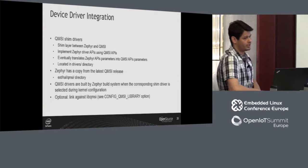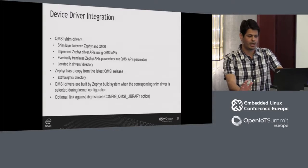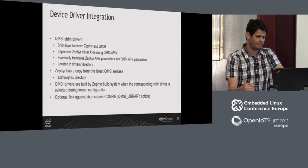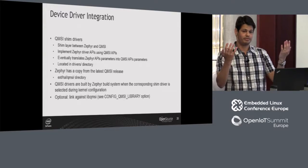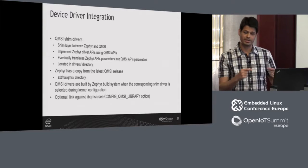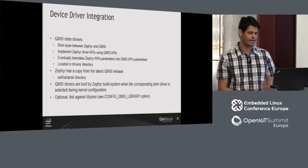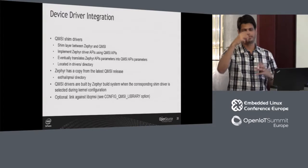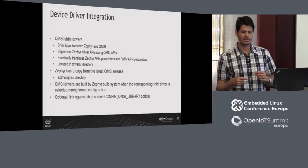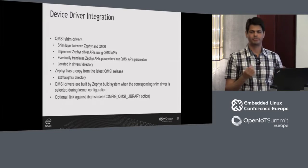What we did to fit this model was come up with a shim driver approach — basically a shim layer between Zephyr and QMSI. The shim driver implements Zephyr APIs, and the actual implementation of the driver is done by the QMSI side, so we simply call QMSI APIs. Occasionally we need to do some parameter translations from one API to the other, but that is not the majority of cases.